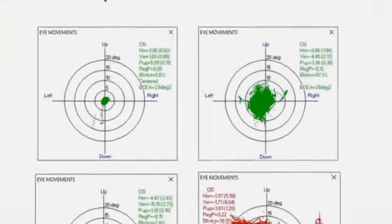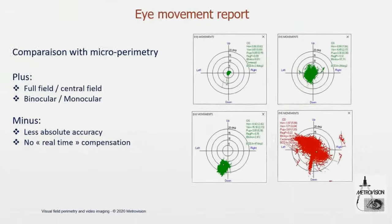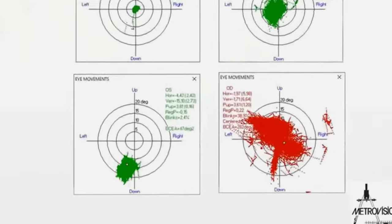Here, it's a patient with a lot of fluctuation in the fixation. And on this other graph here, we see a patient with nystagmus.